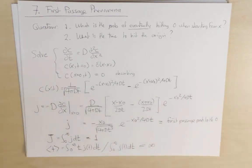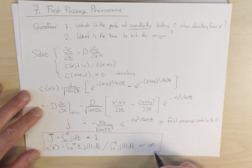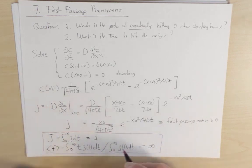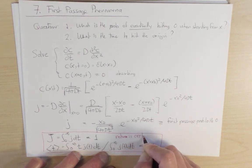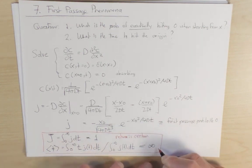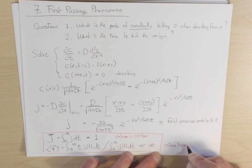So we have our fundamental basic result of first passage processes, which is that this one says that return is certain. But this one says that the return time, even though return is certain, the return time equals infinity.